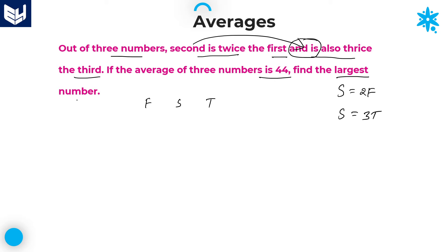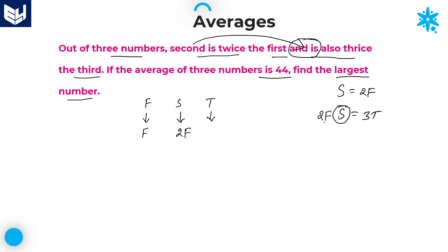Whenever problems involve these kinds of sentences, you need to convert each and every variable in terms of a single variable. Since we have three different numbers, I will write each number in terms of the first number. Let the first number be f. Second is twice the first, therefore second number is 2f. For the third number: since s equals 2f and s equals 3t, substituting gives t equals 2f divided by 3.